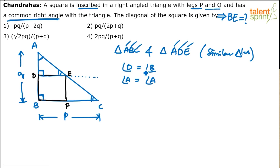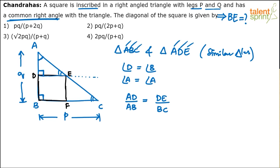Since the triangles are similar, we can write AD/AB = DE/BC. AD is q minus s, where s is the side of the square. AB is q. DE is s (side of the square). BC is p. So: (q − s)/q = s/p.